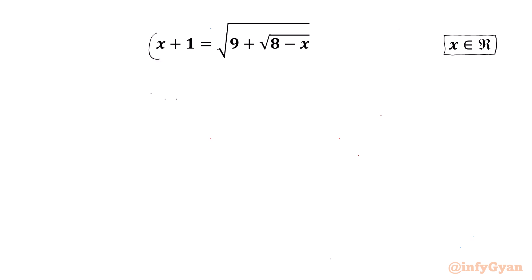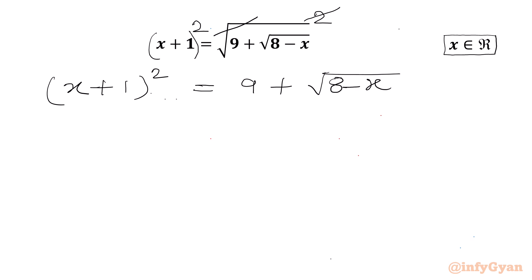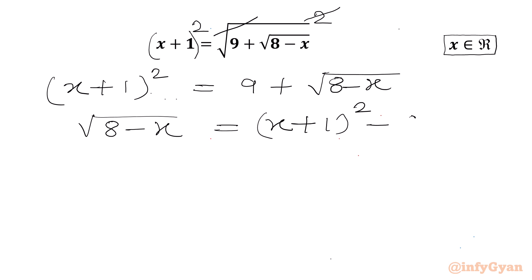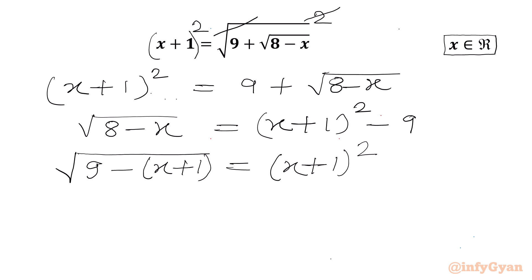Let us get started by considering power 2 on both sides, so the square root and square cancel. We get the equation (x+1)² equals 9 plus square root of 8 minus x. Rearranging, square root of 8 minus x equals (x+1)² minus 9. Writing the LHS radicand as 9 minus (x+1), we expand to get 8 minus x equals (x+1)² minus 9.